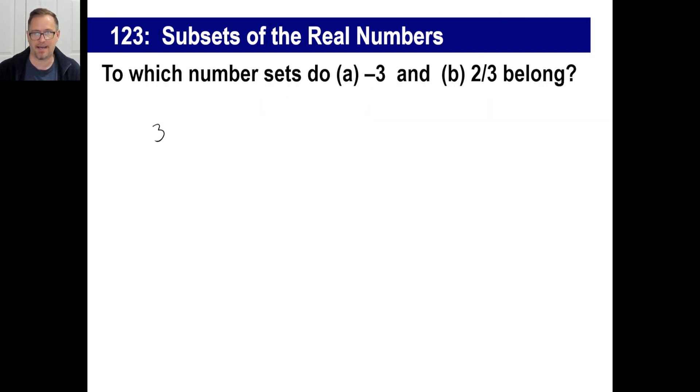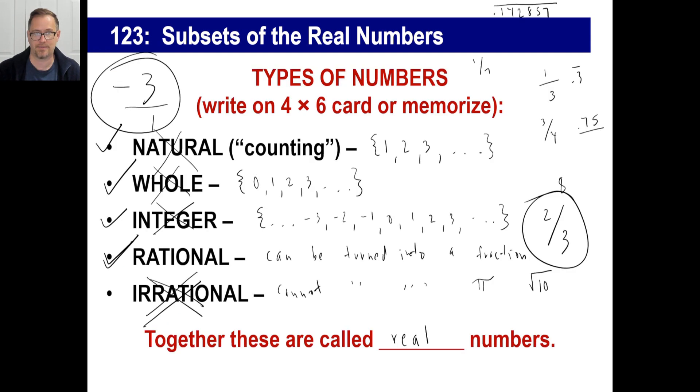Let's go to pi. That's your next one. We've already kind of talked about that. Well, is pi a natural number? No. That's not a whole. That's not an integer. It's not a rational. It's only irrational. And that's it.